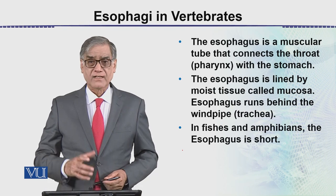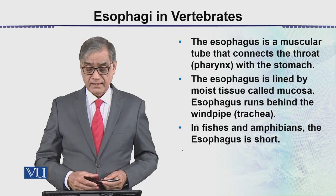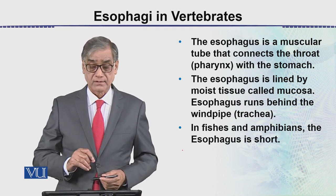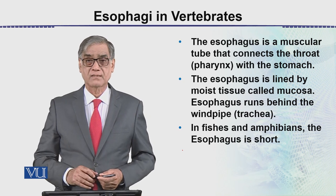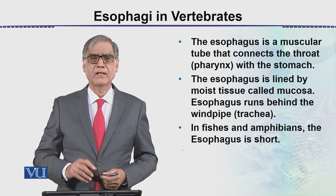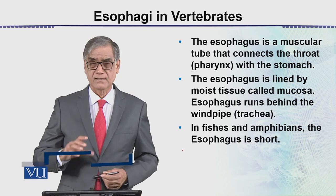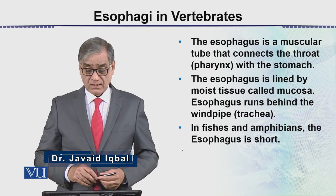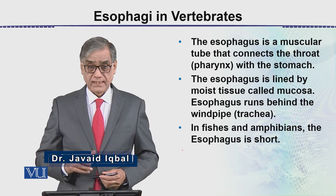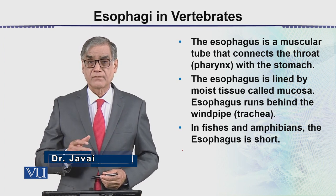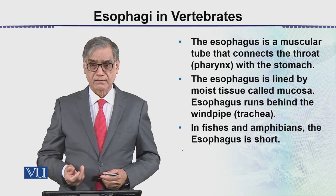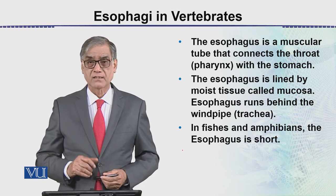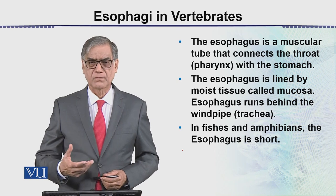The esophagus is a muscular tube that connects the throat, that is the pharynx, with the stomach. Depending upon the type of animal, its length varies. It is lined with a mucous membrane inside, which produces mucus.